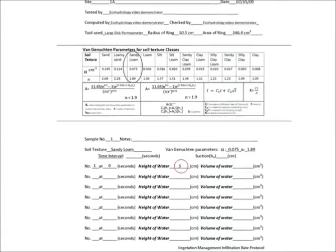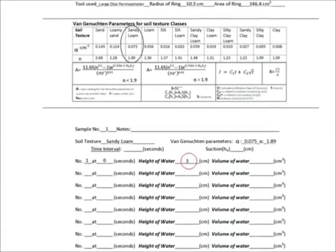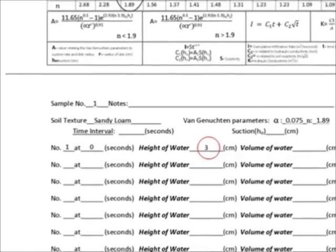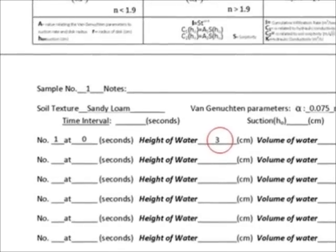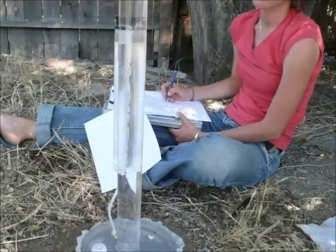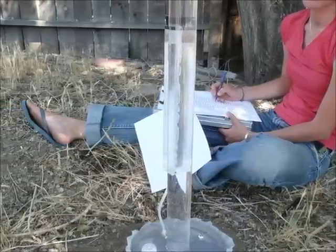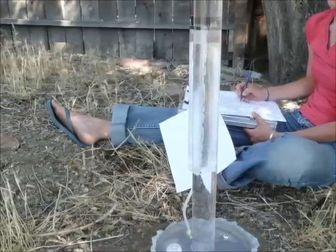Before the infiltration trial is to begin, note the initial water level on the storage tube and note on the datasheet. The infiltration analysis is now ready to begin. Place the permeameter onto the level ground.